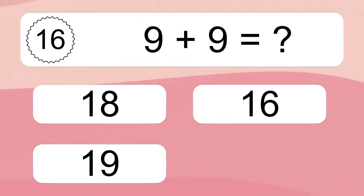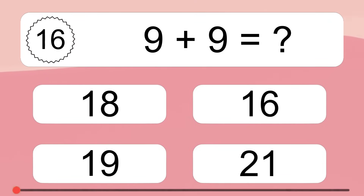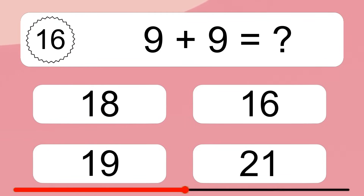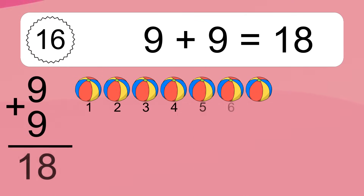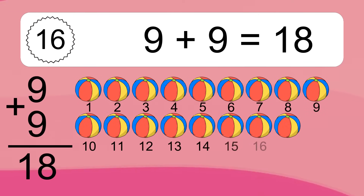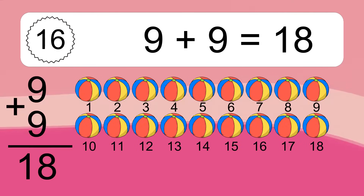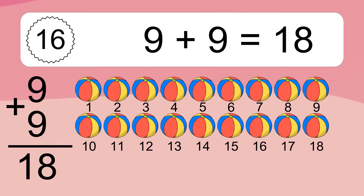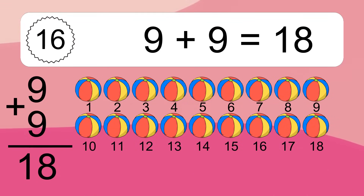9 plus 9 equals what? 9 plus 9 equals 18. Let's count it: 1, 2, 3, 4, 5, 6, 7, 8, 9, 10, 11, 12, 13, 14, 15, 16, 17, 18.